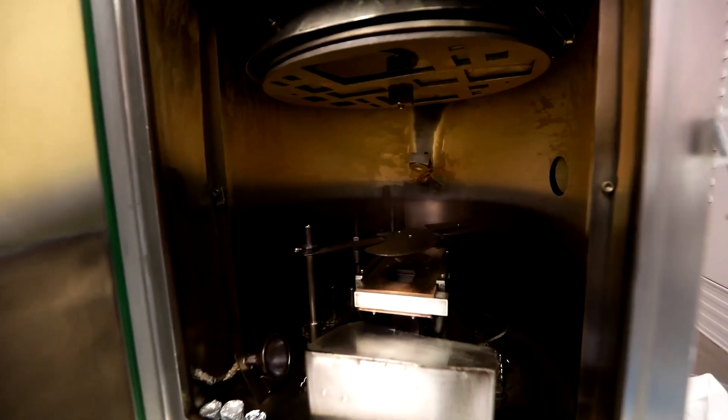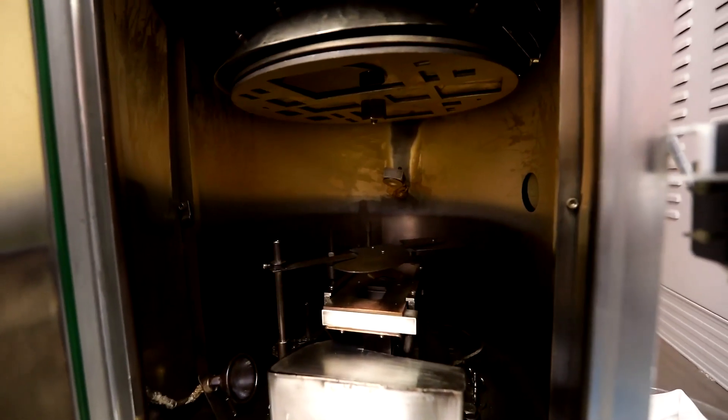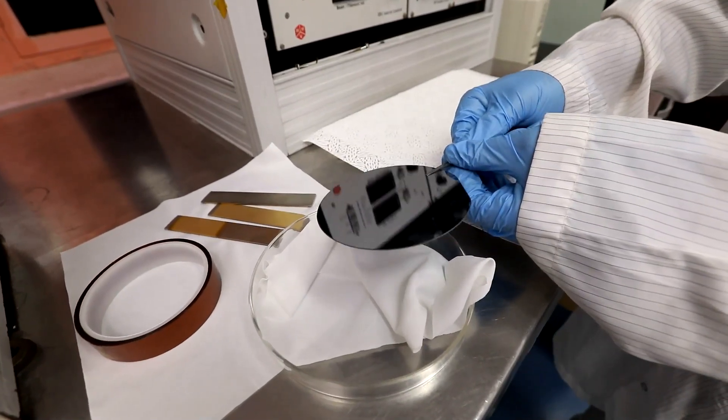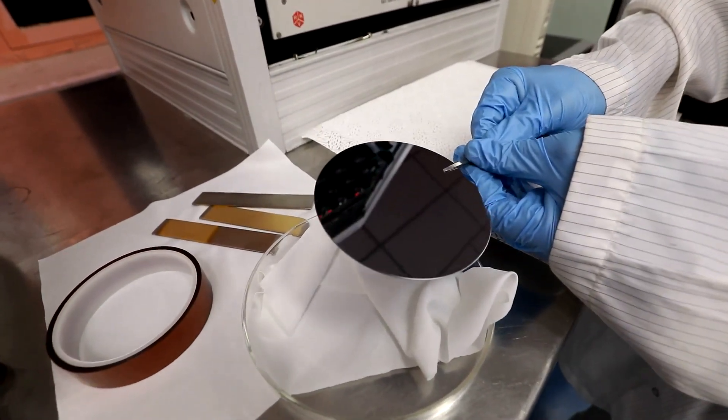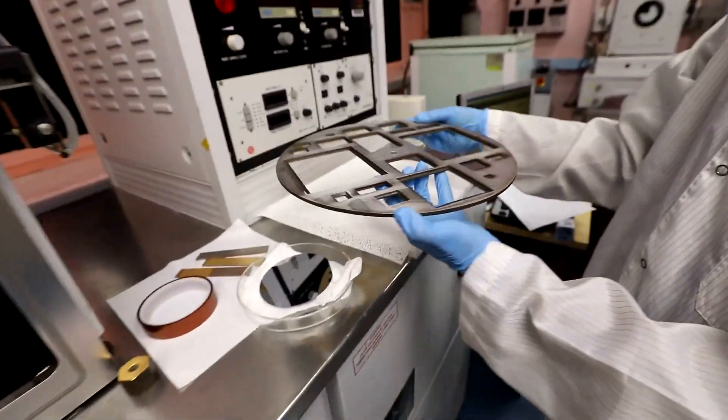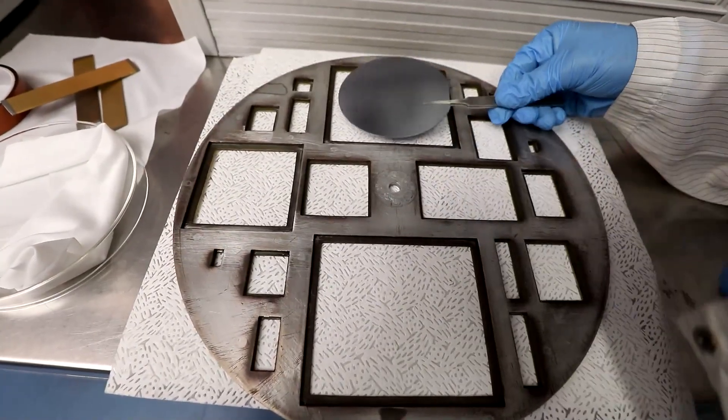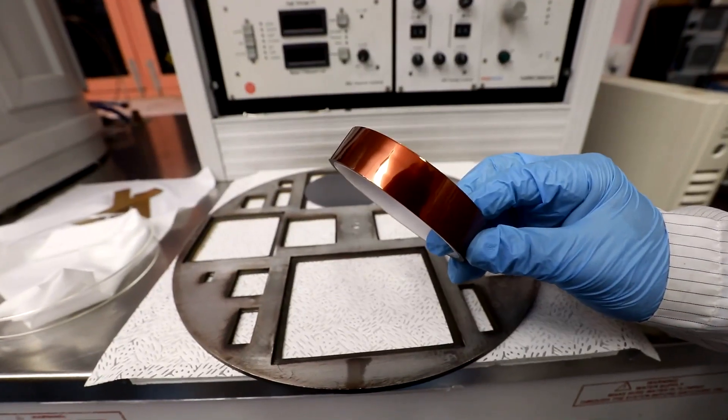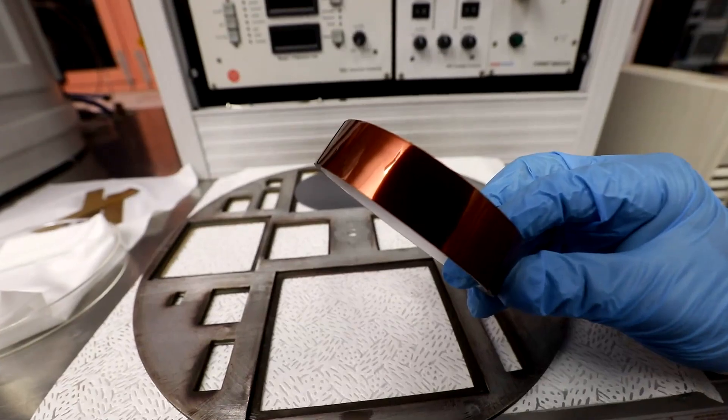Now we will show the sample loading. Our sample is a two inch silicon wafer or we can use silicon wafer pieces. This is the sample holder. The samples are placed on the sample holder and are secured with metal pins or Kapton tape. Make sure it is tightly held.